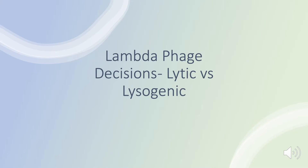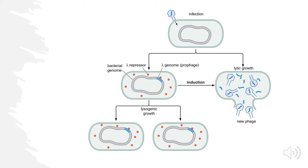Hello everyone and welcome to the channel. Today we're going to be talking about the lambda phage and its decision-making process — specifically lytic and lysogenic growth. We're going to start with an image showing infection of a bacteriophage into a host cell. Upon this infection, we can see two outcomes: lytic growth and lysogenic growth.